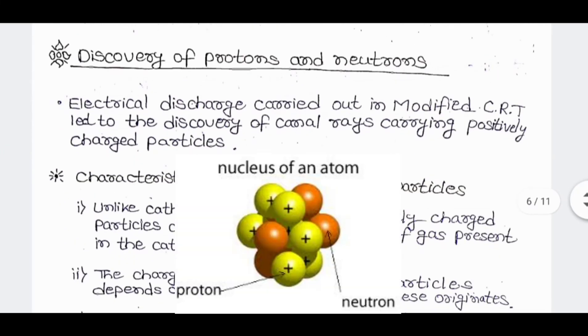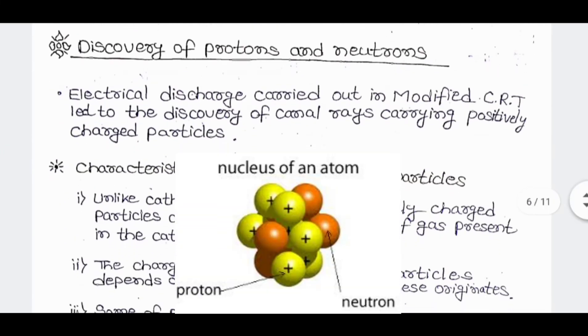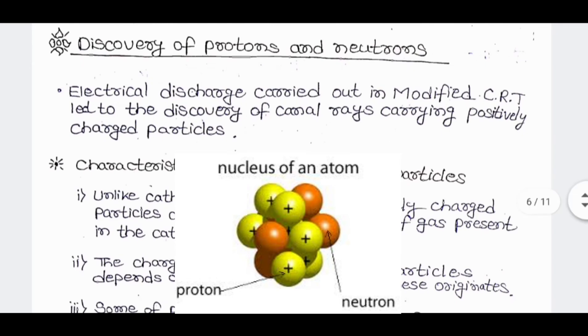Discovery of protons and neutrons: Electrical discharge carried out by modified CRT led to the discovery of canal rays carrying positively charged particles.